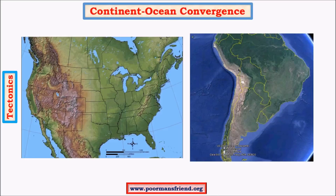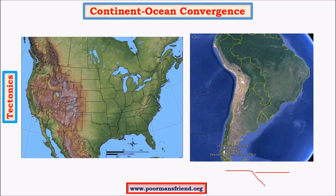To understand this upthrust, imagine that this is an oceanic plate and this is a continental plate. The oceanic plate is moving towards the continental plate and in that scenario it subducts below the continental plate. When it subducts, the continental plate doesn't stay in its place but upthrusts - it moves onto the top - and this movement creates upliftment of sediments or whatever is present in that landform.